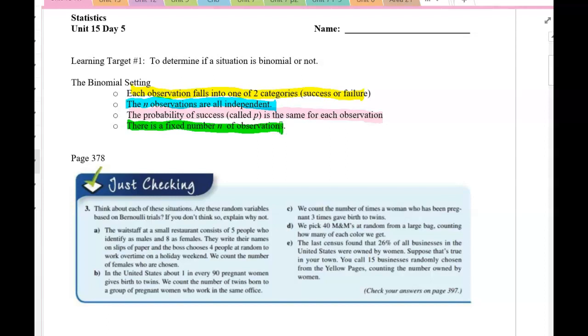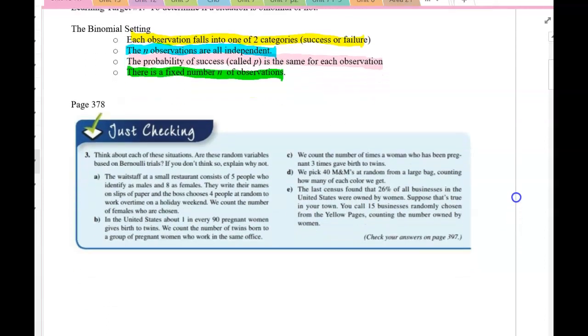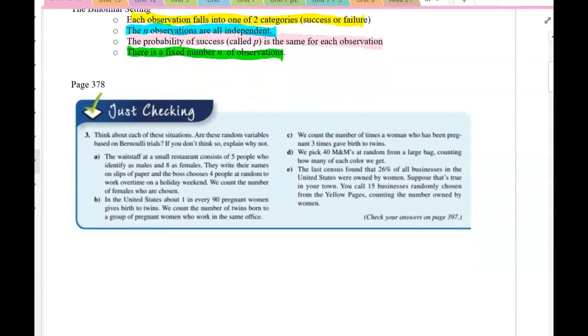So if we look at this example on page 378 of your textbook, we want to see if these situations are binomial or not. So for part A, the waitstaff at a small restaurant consists of five people who identify as males and eight as females. They write their names on a slip of paper and their boss chooses four people at random to work overtime on a holiday weekend. We count the number of females who were chosen.